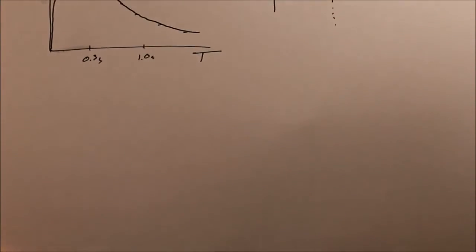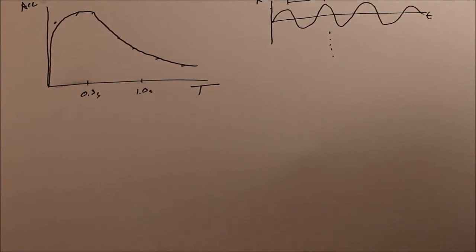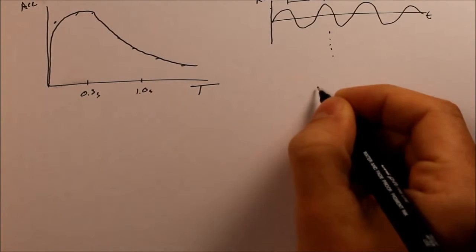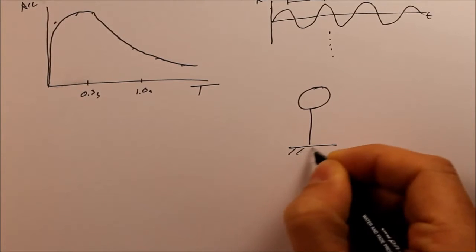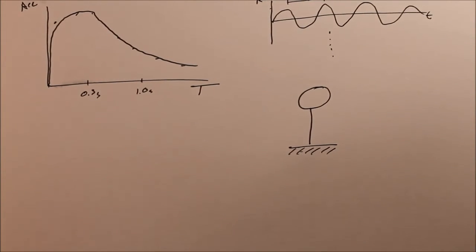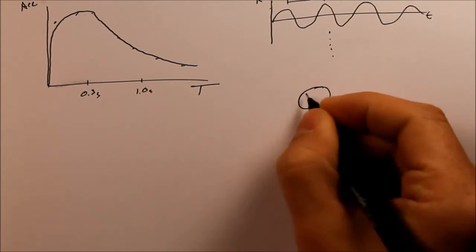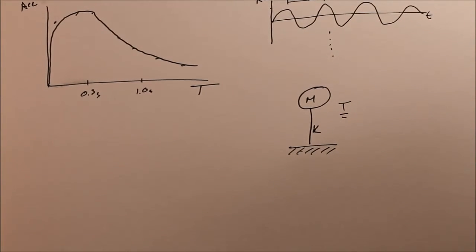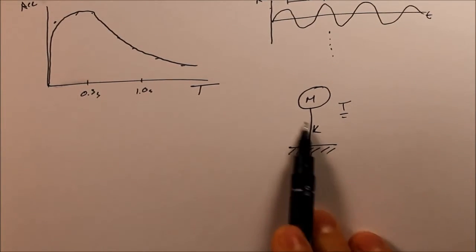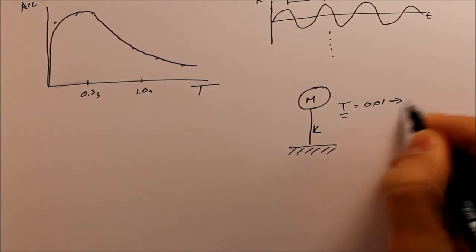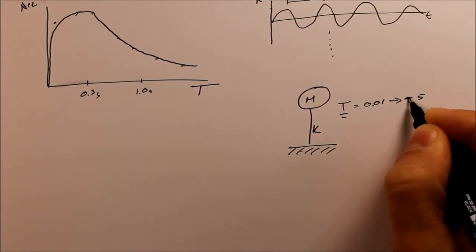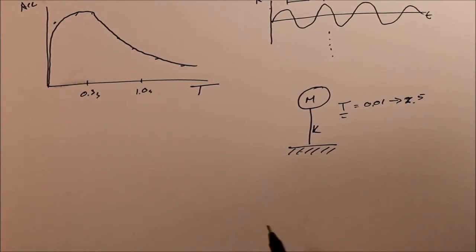And so what we look at, as you recall from the previous video where we had this single degree of freedom structure, this lollipop structure, and it has some given period T. It has a mass and a stiffness. Now we subject many of these, so for a whole range of T, so sort of T equals 0.01 up to maybe 2.5 seconds, and many different intervals in between, we subject them to a whole lot of earthquakes.